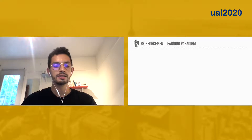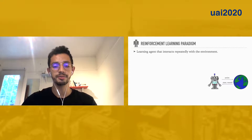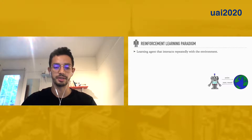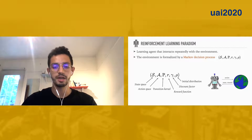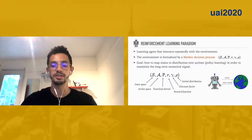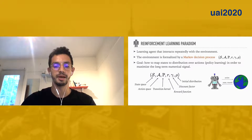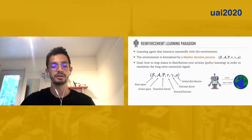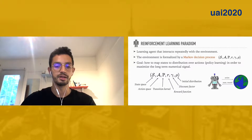Our setting is the classical reinforcement learning paradigm, where the agent interacts repeatedly with the environment. The environment is formalized by a Markov decision process, and the ultimate goal of the agent is to learn a policy in order to maximize the long-term numerical signal.